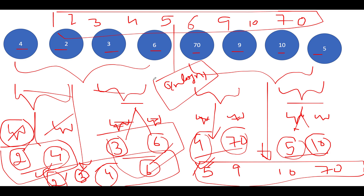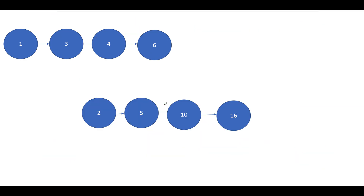Now that we understand merge sort on arrays, this approach can be directly applied to linked lists. Let's extend this to a linked list scenario. Consider two linked lists: 1, 3, 4, 6 and 2, 5, 10, 16 — both already sorted in nature. We want to merge them in O(length of L1 + length of L2) time.